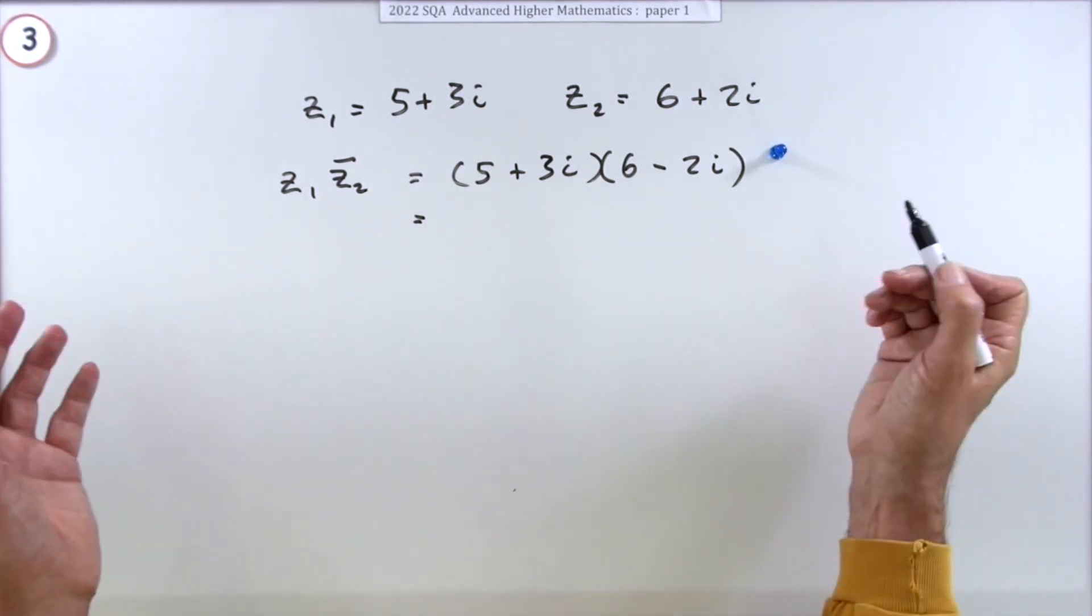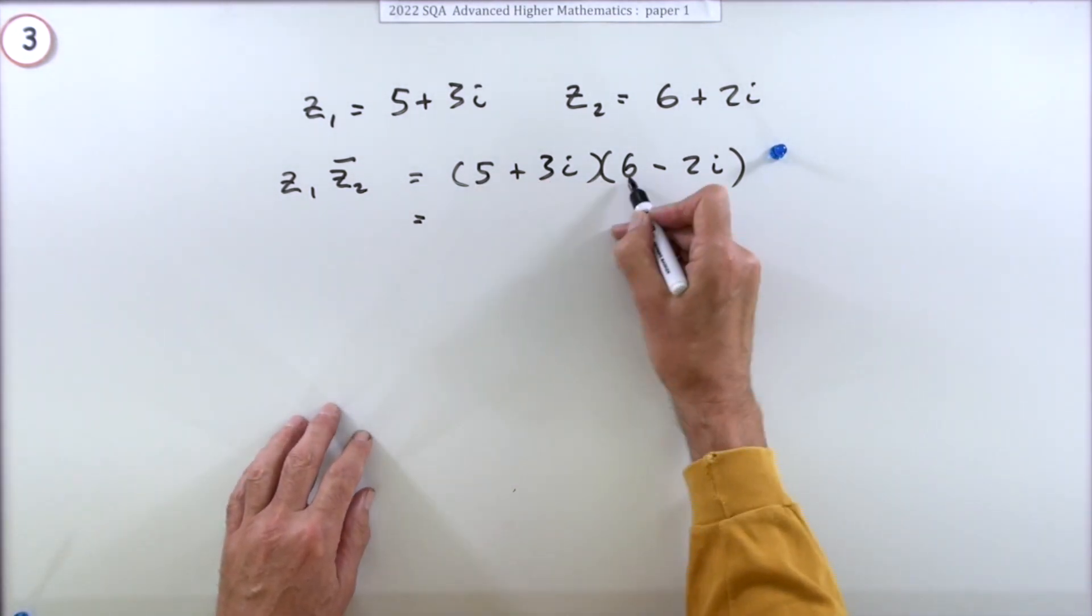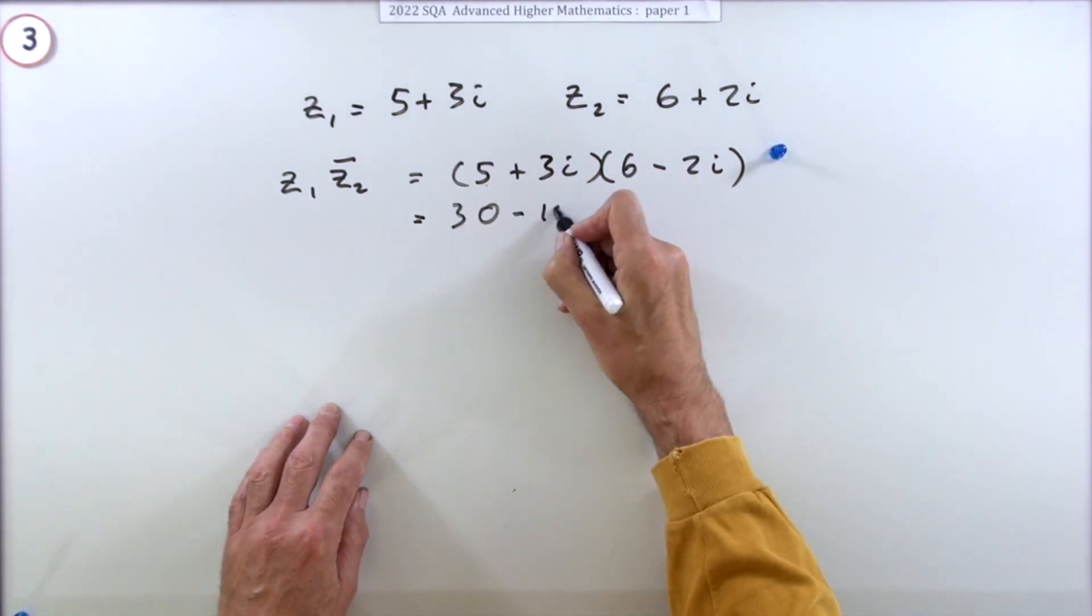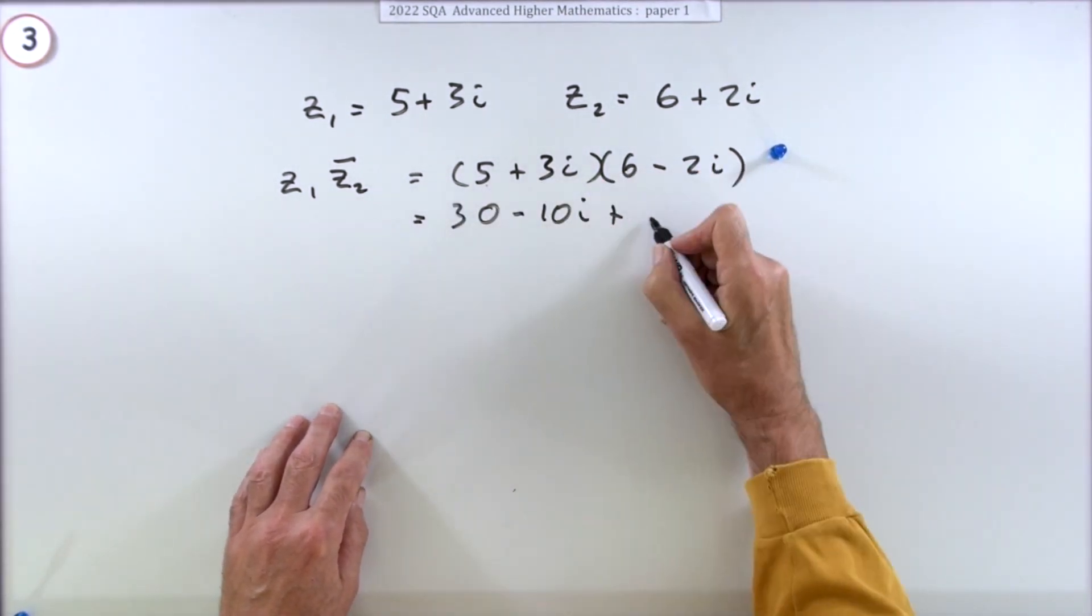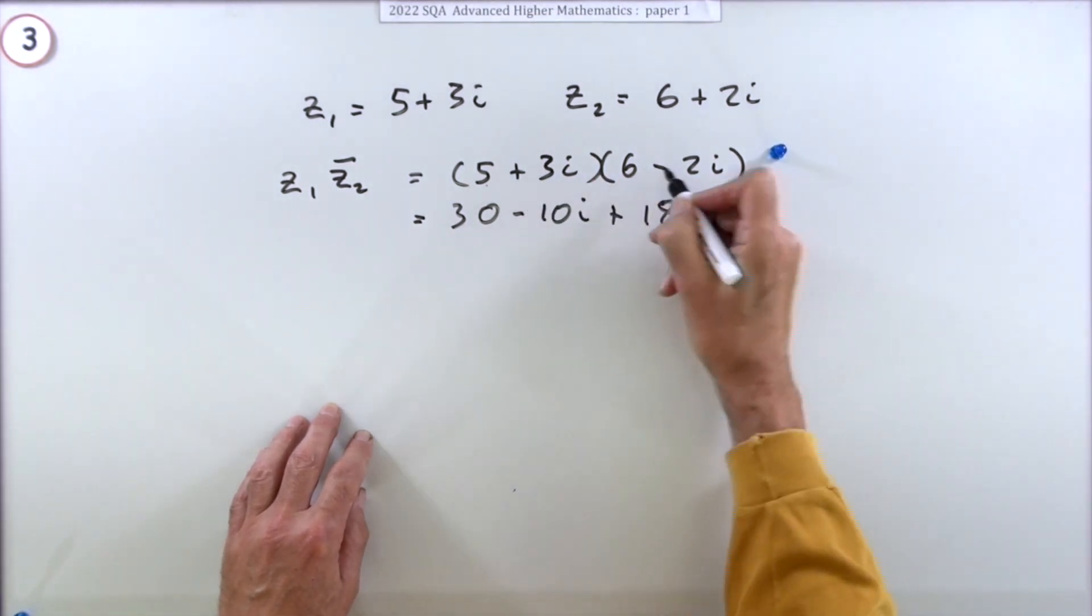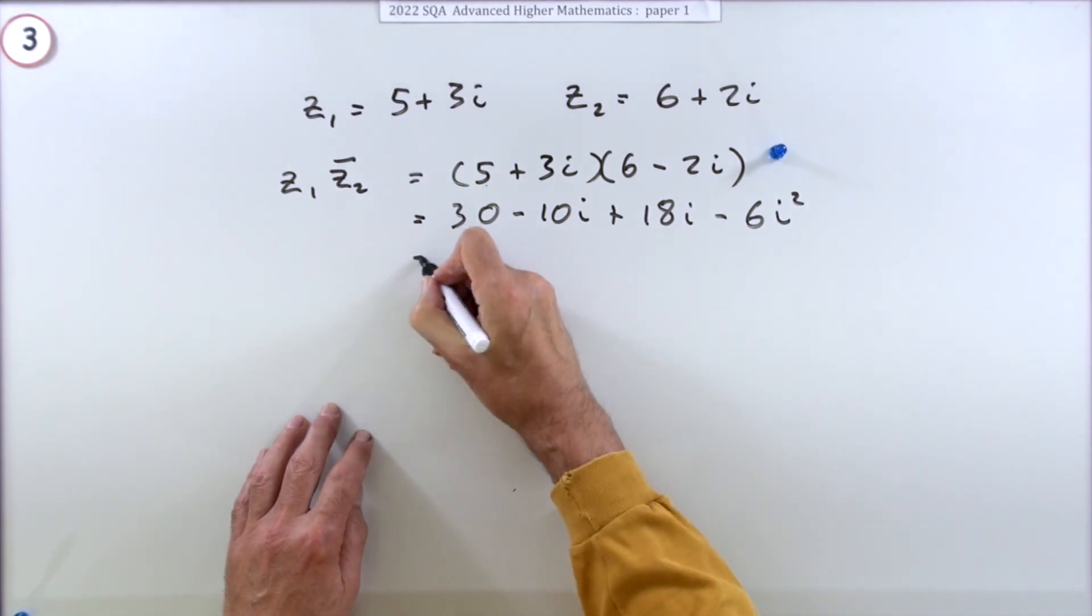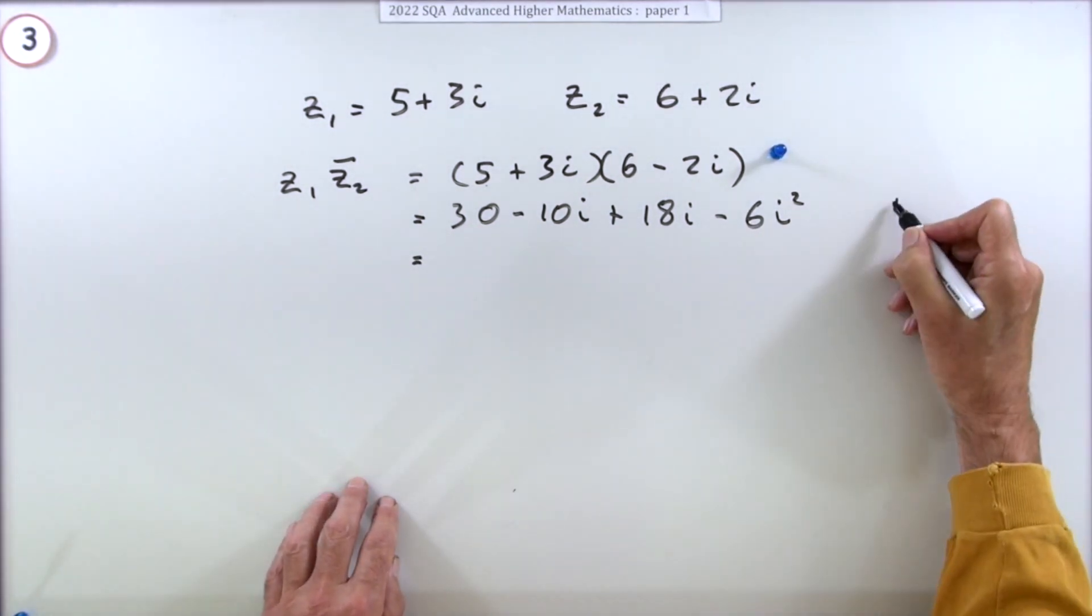I'll just spell it out. You could write the answer down in one go because there's only one more mark. Five sixes, that's 30. Five times negative two, negative 10i. Three sixes are 18i. And that's a negative six, and I'll put it down, i squared.